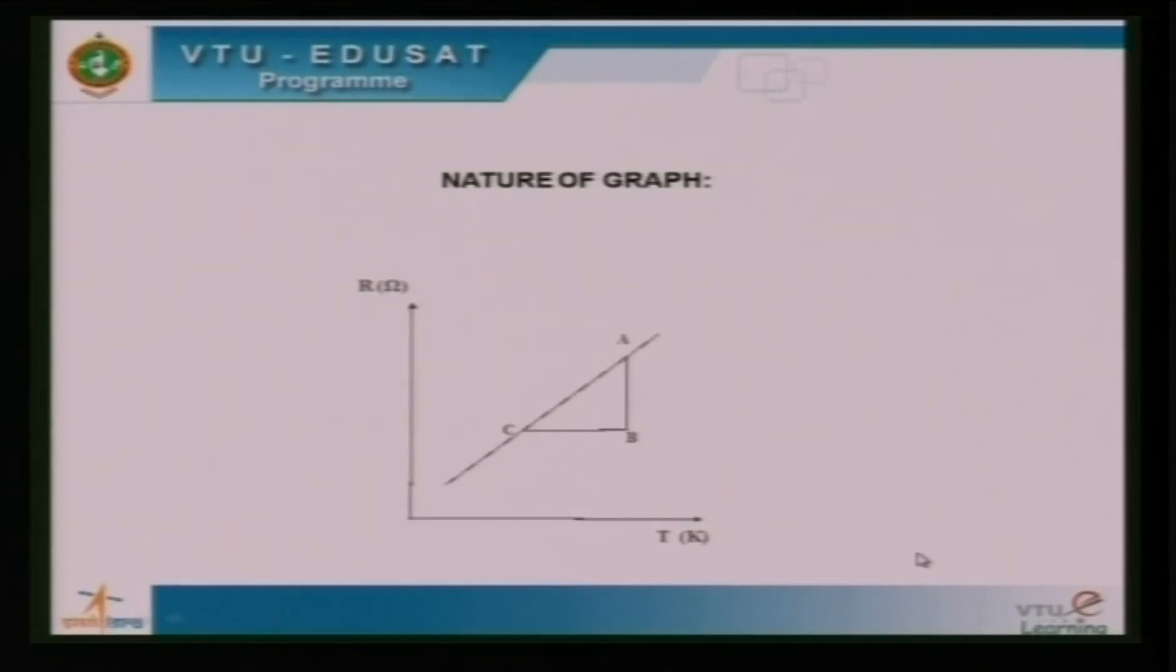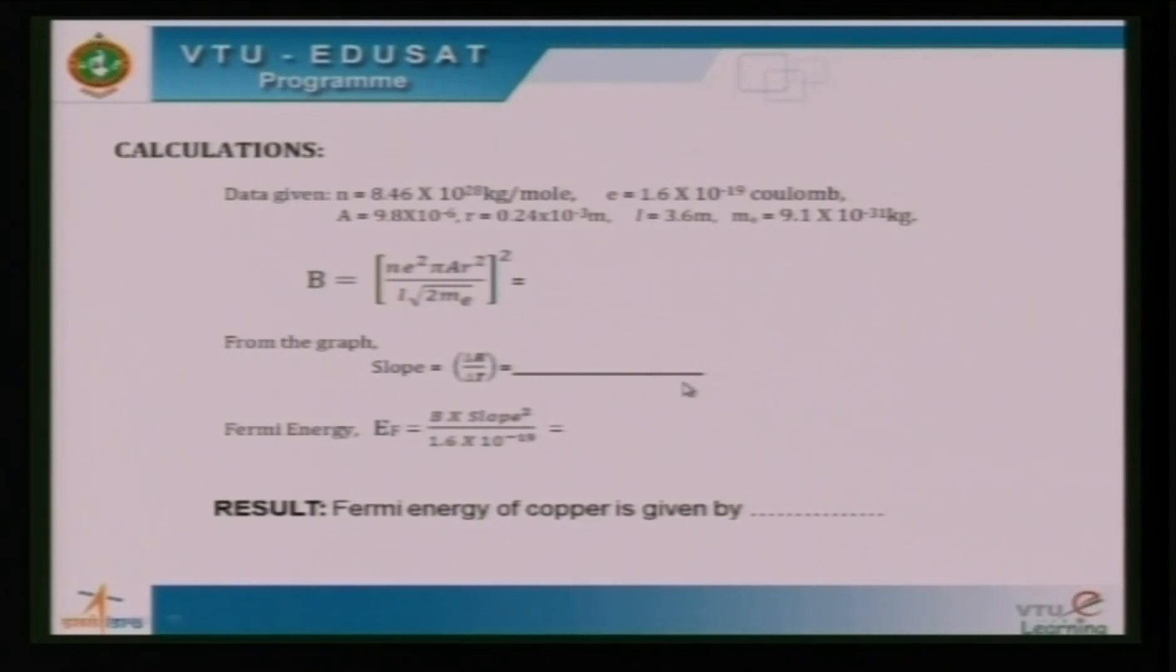Then we plot graph of resistance versus temperature in Kelvin. Resistance is plotted along the y-axis and temperature along the x-axis. Then we find the slope of this plotting, and we have to insert the value of slope and square it and insert in the Fermi energy formula which is given by B into slope square divided by 1.6 into 10 power minus 19, which gives us the Fermi energy value in electron volt. Here B is nothing but NE square pi AR square divided by L root of 2 ME whole square, where N is number of electrons per unit volume, which is also known as electron concentration.